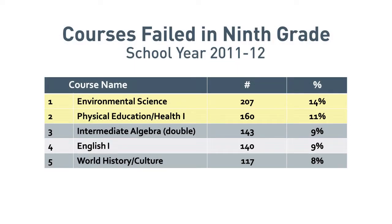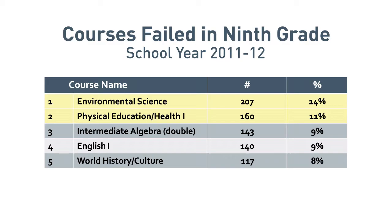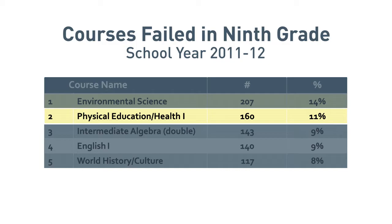I shared this finding with district leadership, and it immediately sparked some questions and dialogue about what was going on in Elizabeth, where our students were struggling, and particularly which courses they were struggling with the most. I found that over 50% of the students who were off track had failed one of five subjects. The most common subject was environmental science, and the second most common, surprisingly, was physical education.